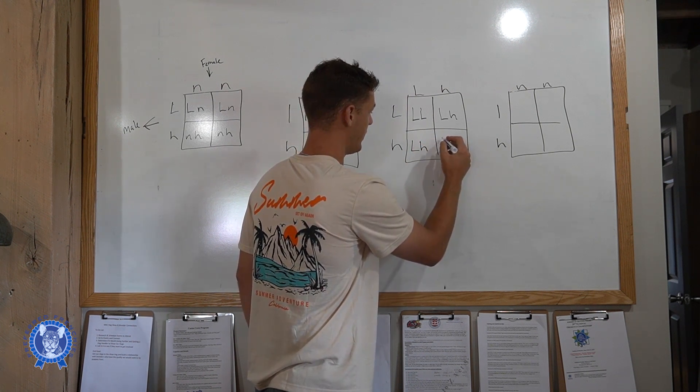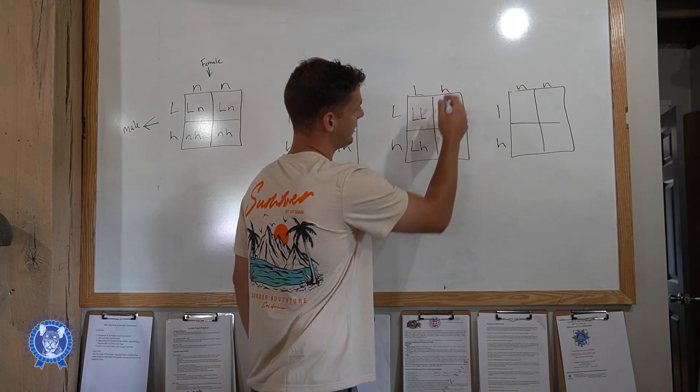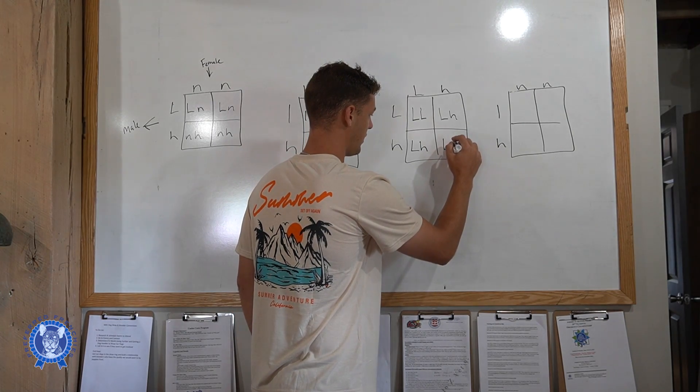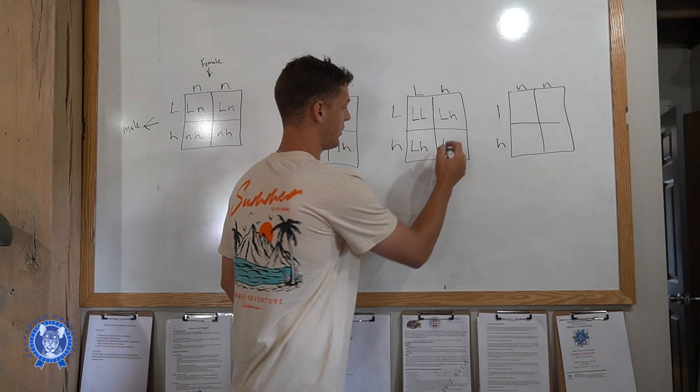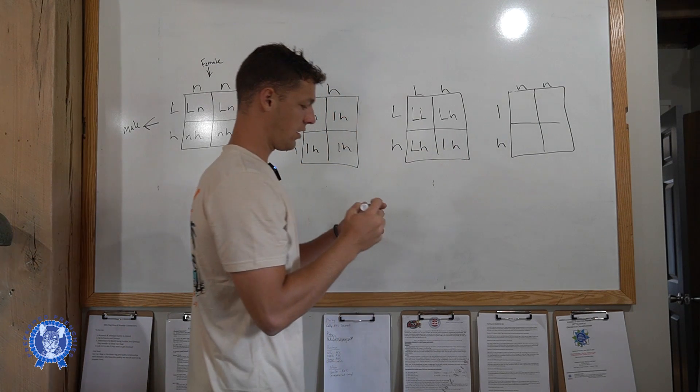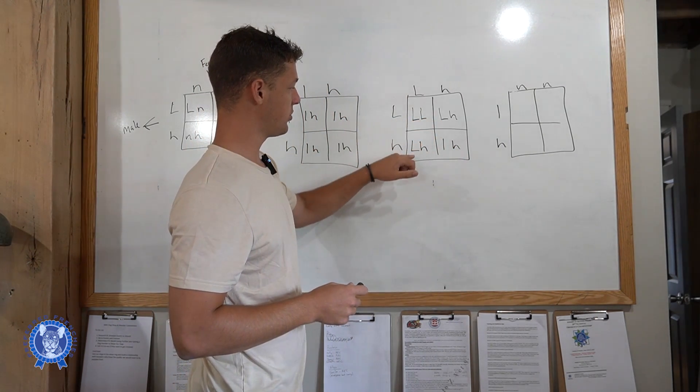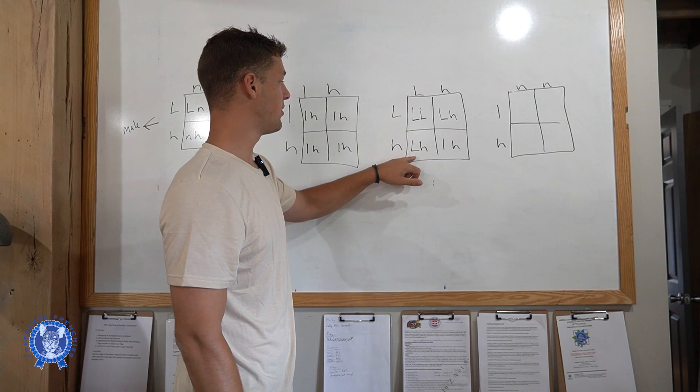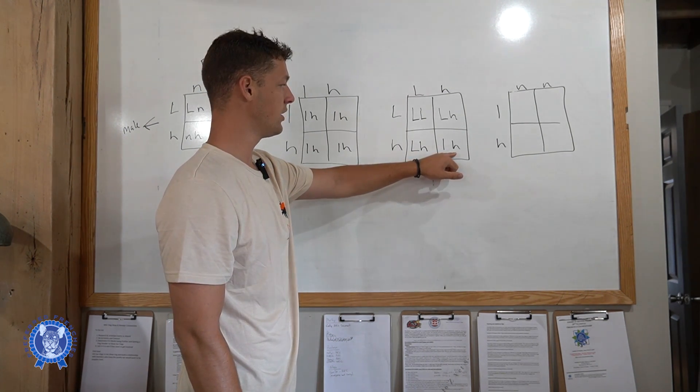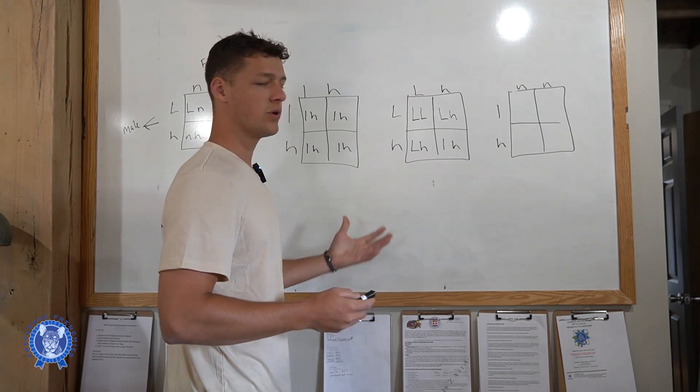And then you have a fluffy carrier chance, and then you got a not a fluffy carrier here as well. And then here you have an opportunity of having a full fluffy. You got two lowercase, it's the same thing. So we'll go LH. Sorry, this should be a lowercase here. So you'd have a 25% chance of having a non-fluffy, you'd have a 50% chance of having a fluffy carrier, and a 25% chance of having a full fluffy puppy.